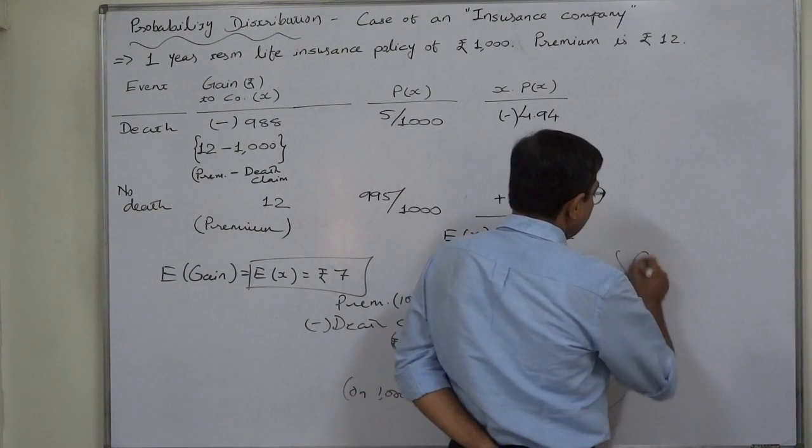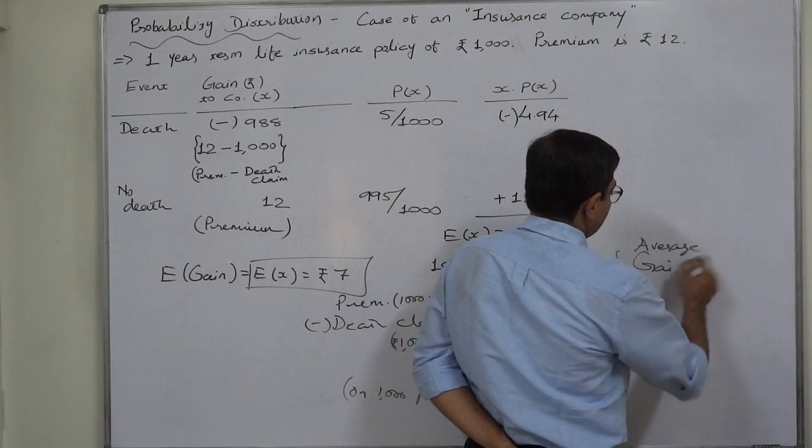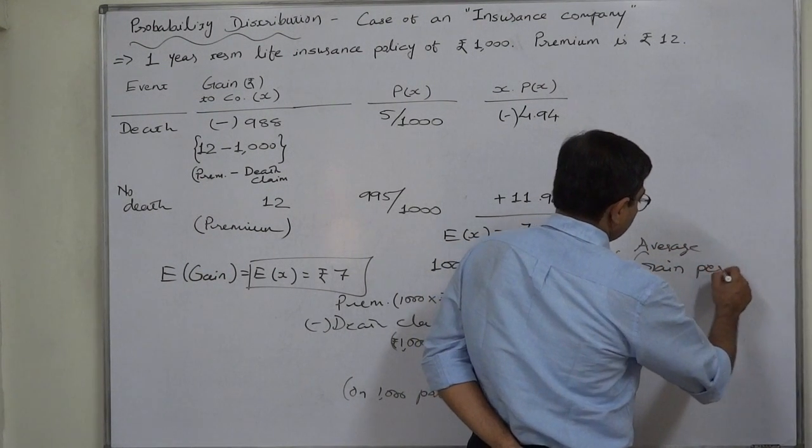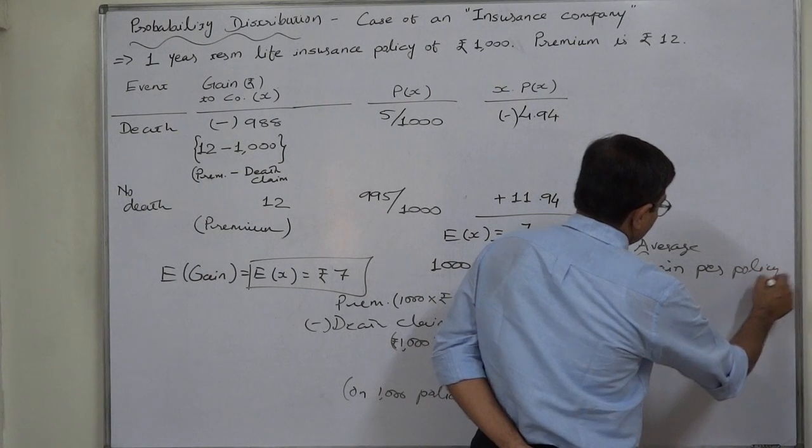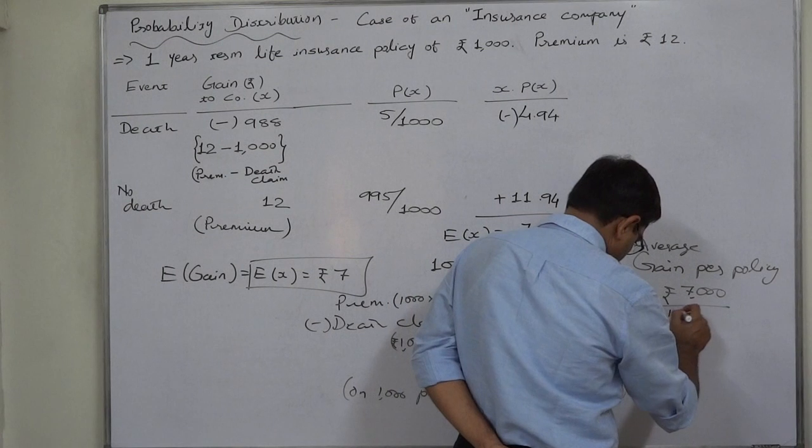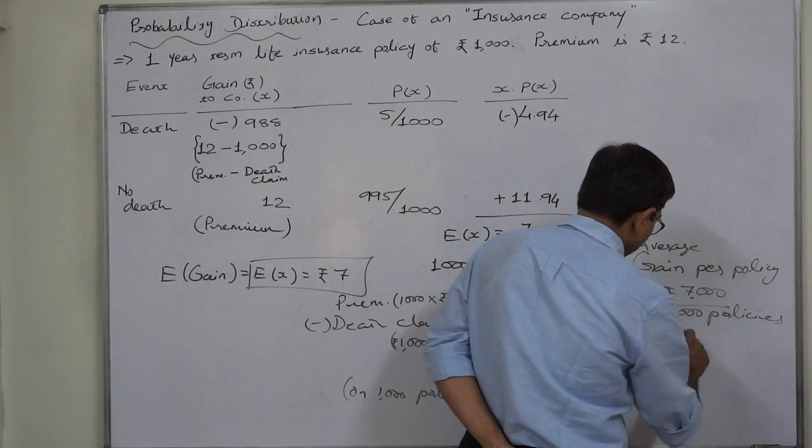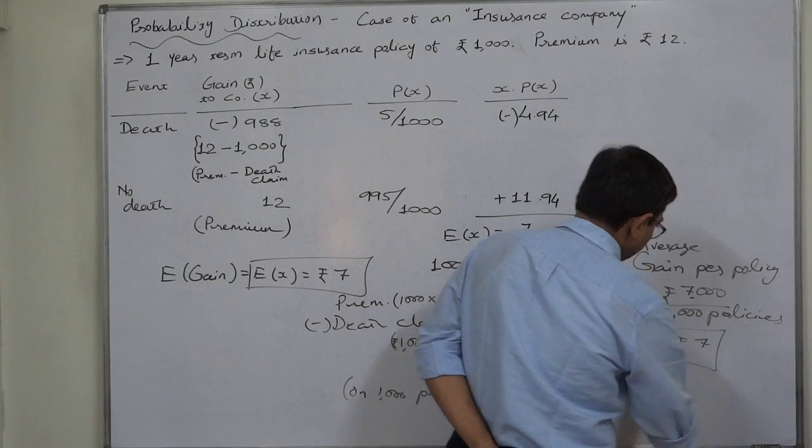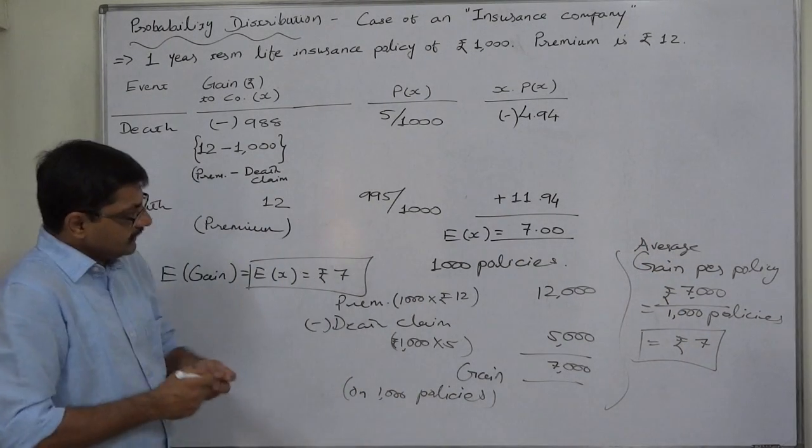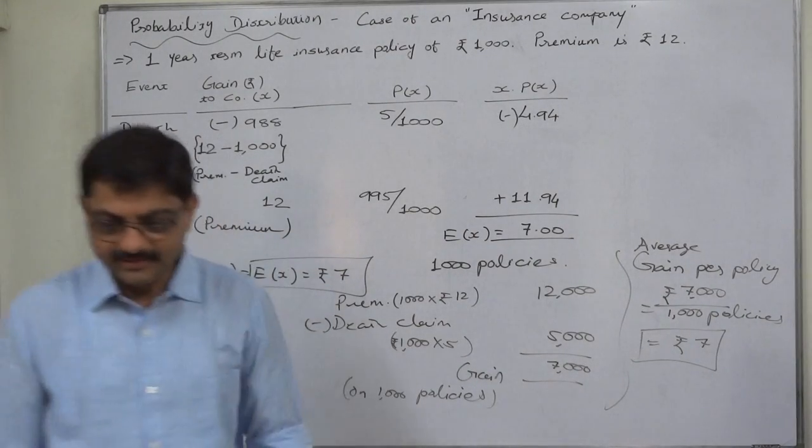Gain or average gain per policy will be rupees 7,000 total gain on 1000 policies divided by 1000 policies. It comes to rupees 7 per policy. Expected value is nothing. It is average. That is it. Thank you very much.